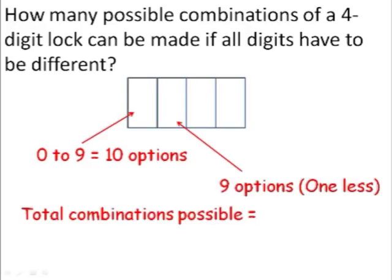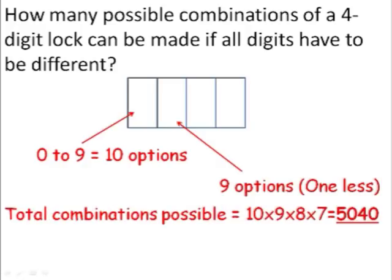Similarly, for the third one, we have 8 options. For the fourth one, we have 7 options. So the total combinations possible will be 10 times 9 times 8 times 7, which is equal to 5,040. So we can see with this constraint, the number of available choices is almost halved.